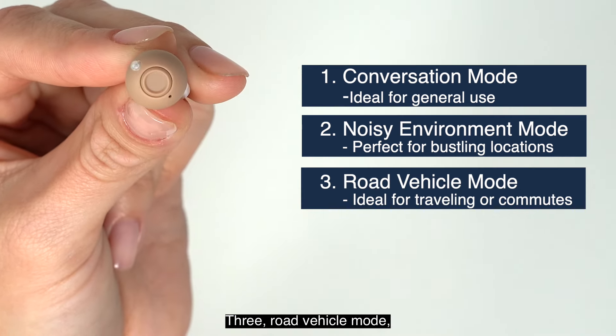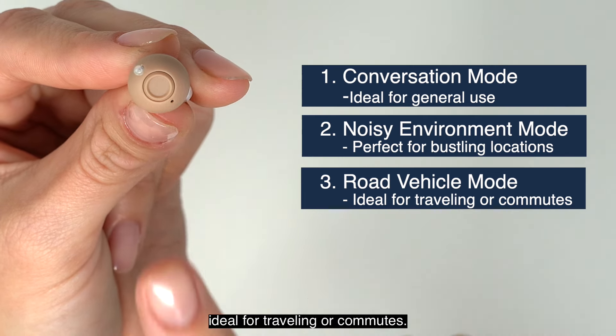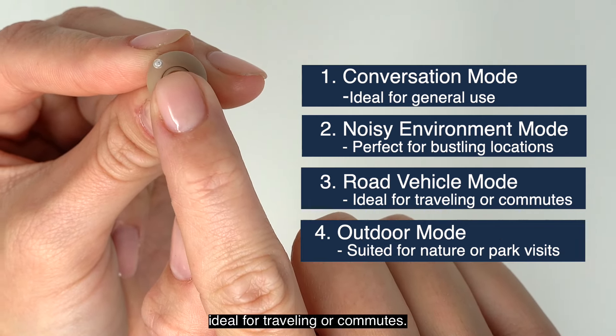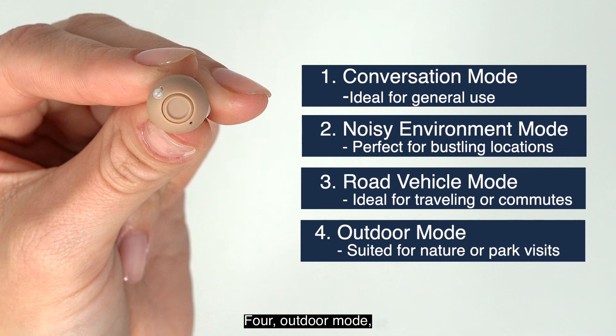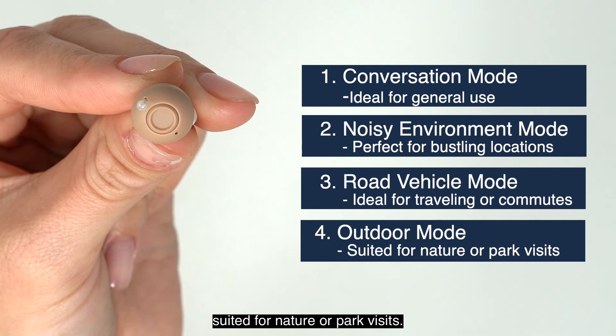3. Road vehicle mode. Ideal for traveling or commutes. 4. Outdoor mode. Suited for nature or park visits.